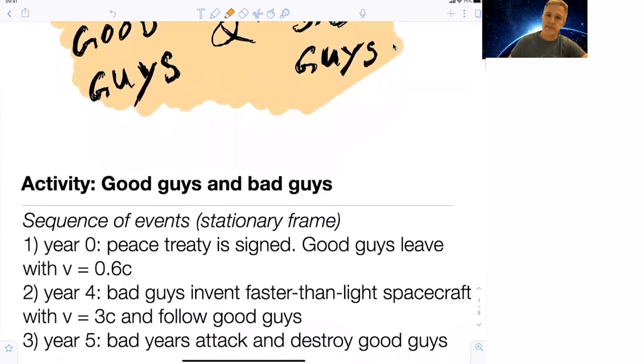The bad guys develop a faster-than-light spacecraft to follow the good guys, succeeding after four years. They follow the good guys, and in year five, the bad guys attack and destroy the good guys.